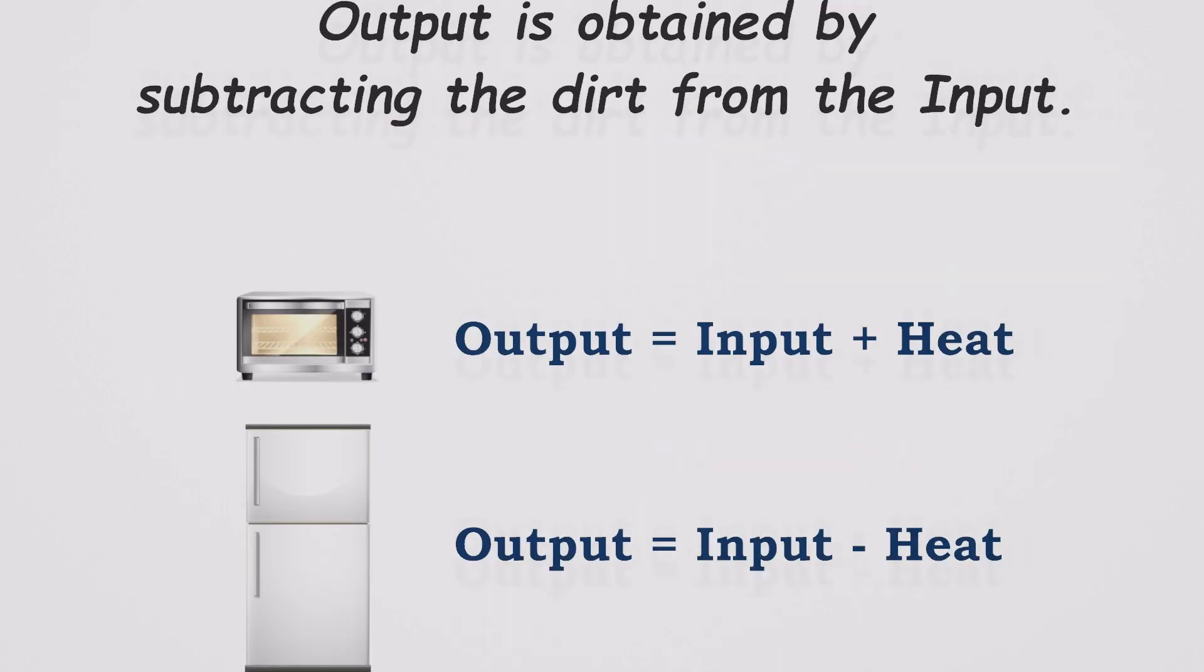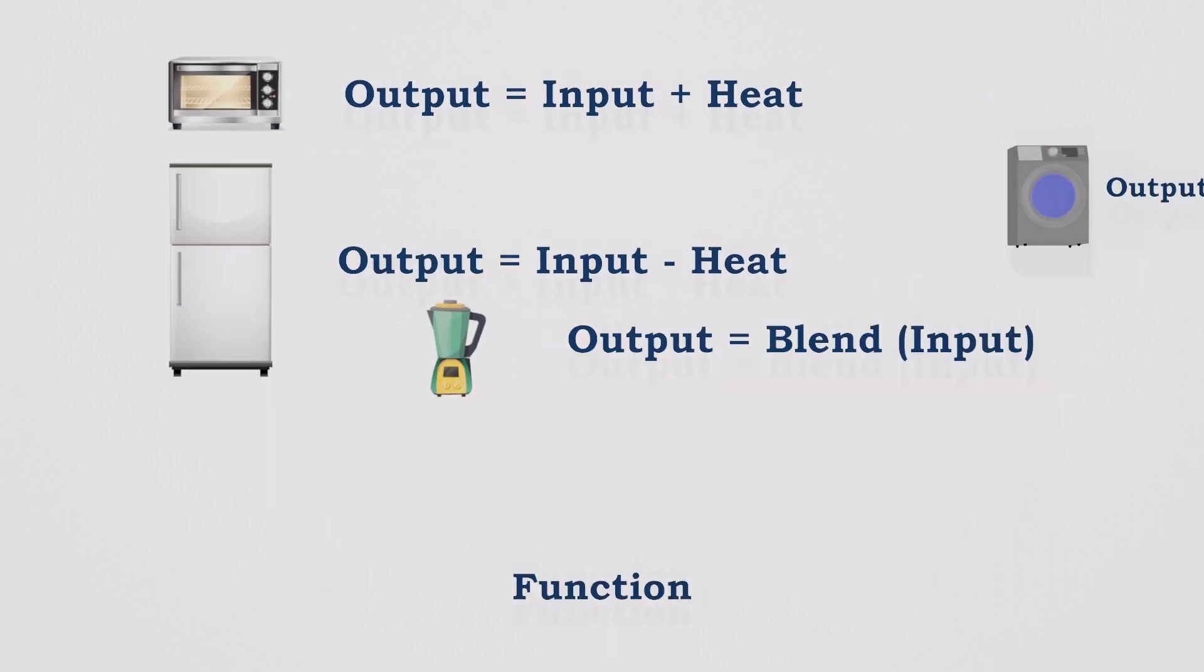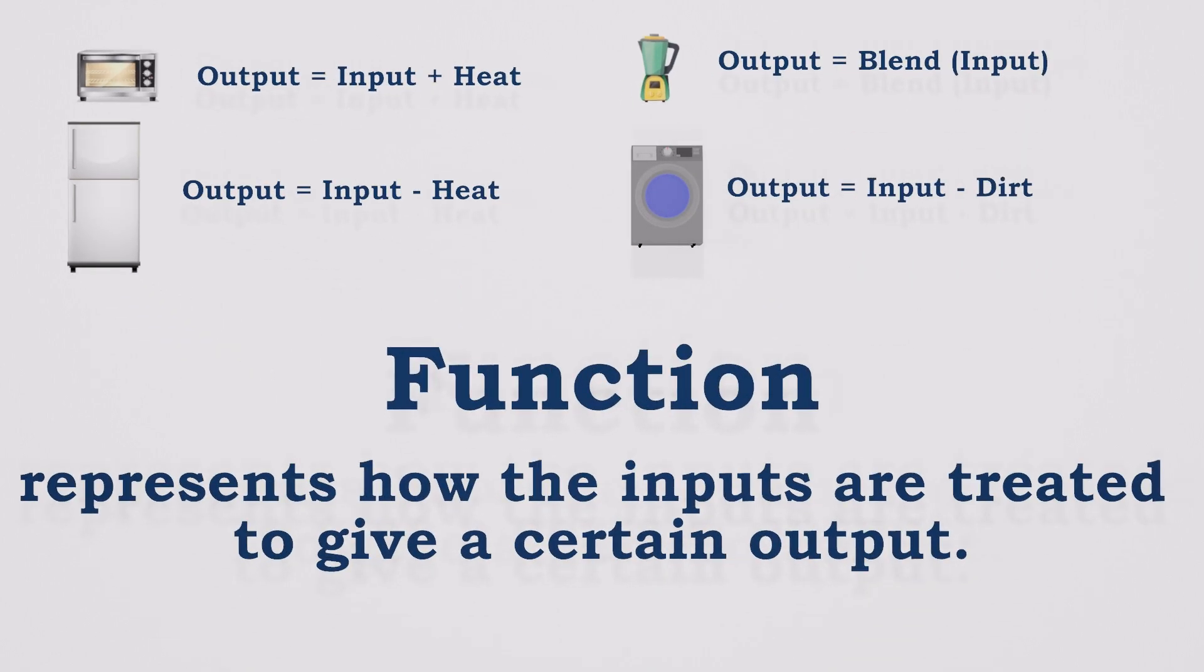Just like washing machines, there are many other machines around us that take various inputs, process them, and give outputs according to their specific functionalities. We can write down the functions for all those. Simply, a function represents how the inputs are treated to give certain output.